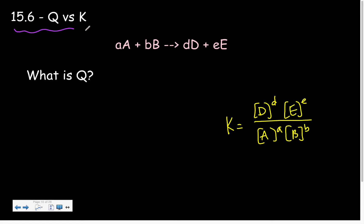Hello AP Chemistry and welcome to section 15.6 where we talk about Q versus K. So K, equilibrium constant. And this is our equilibrium expression where it's our products raised to their respective coefficients over the reactants raised to their respective coefficients.